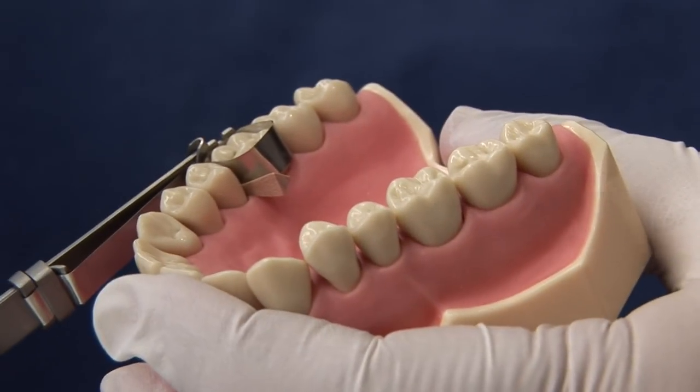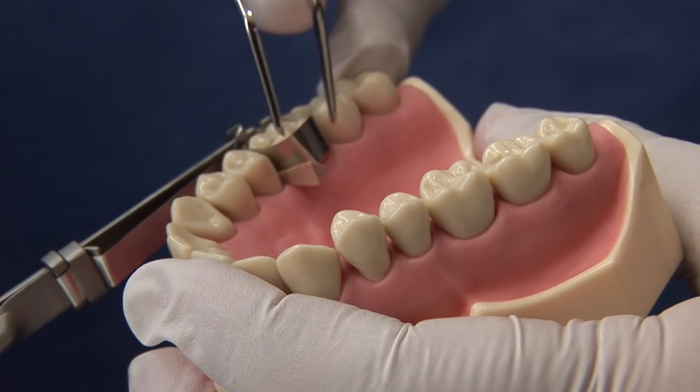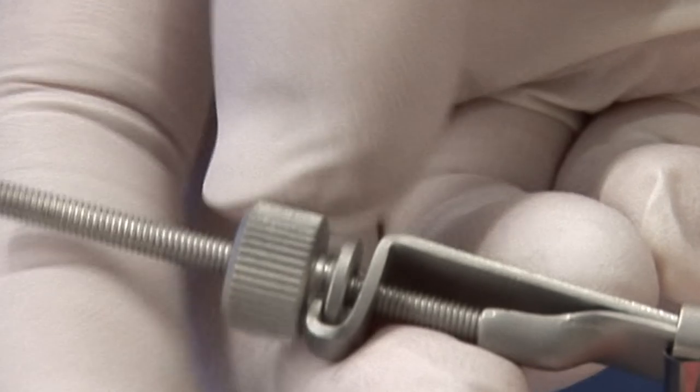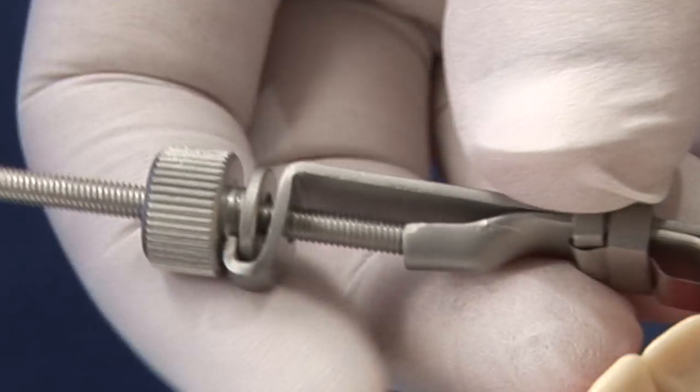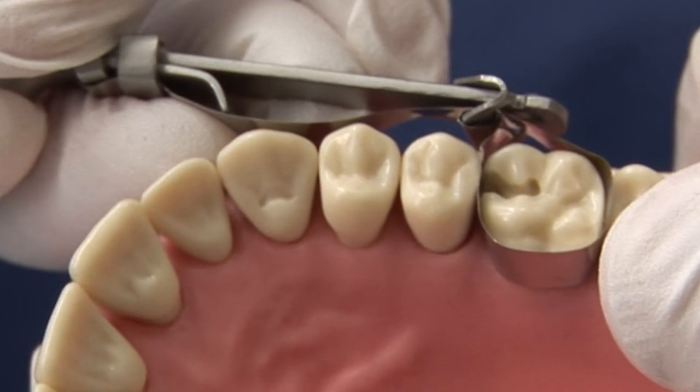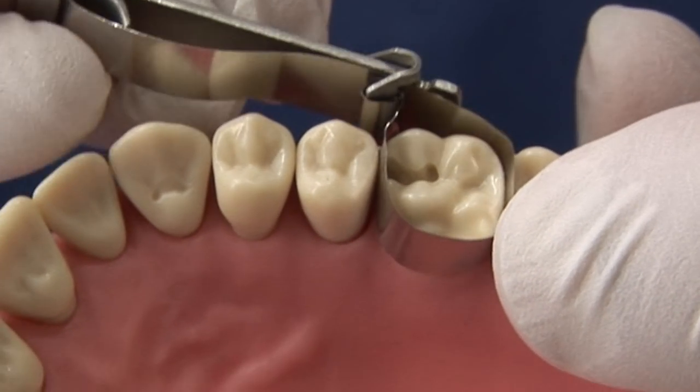To remove the matrix retainer, remove the wooden wedge. Unwind the nut and wriggle the matrix band away from the tooth.